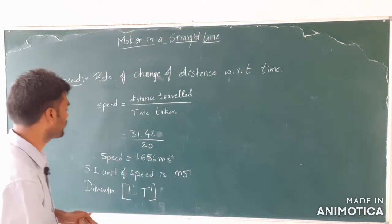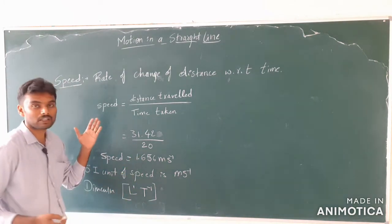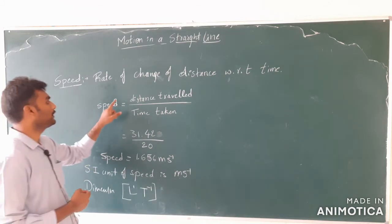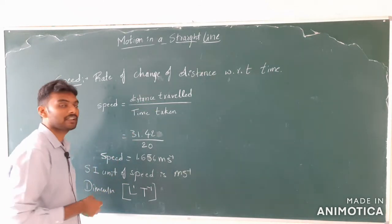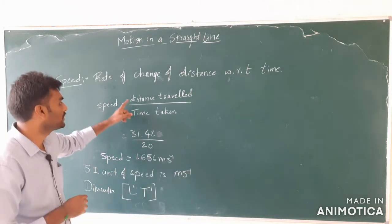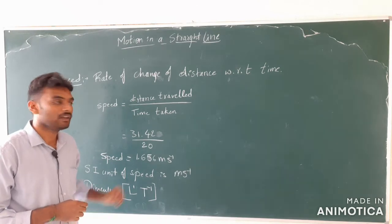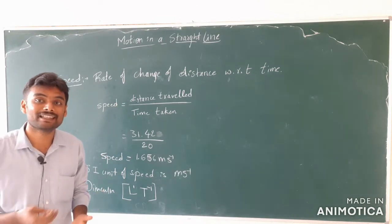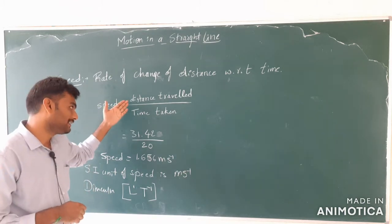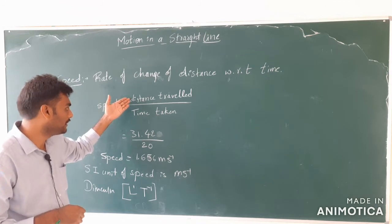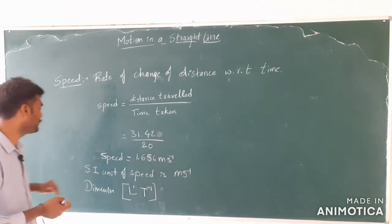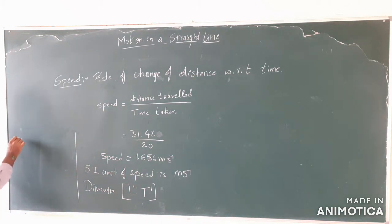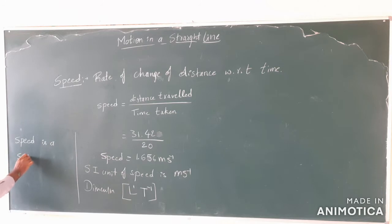Before going to different types of speed, let me give the idea about what kind of quantity speed is. Speed is distance travelled divided by time taken. Distance is a scalar quantity, and time taken is also a scalar quantity — both are scalar quantities. Therefore, speed will also be a scalar quantity. Distance has no direction and time has no direction, so speed will also have no direction, and hence speed is a scalar quantity.